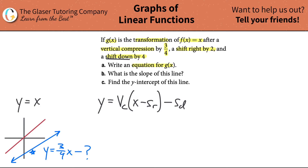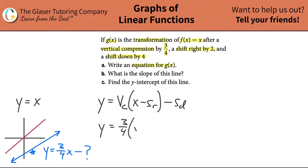This works the way you would normally think — a downward shift in the y direction is negative. What happens if it said an upward shift of 4? This would change into a positive, representing a shift up. So once we have a basic formula like this, all we need to do is plug in the values. The vertical compression was 3 quarters, x minus the shift to the right which was 2, minus the shift down which was 4.